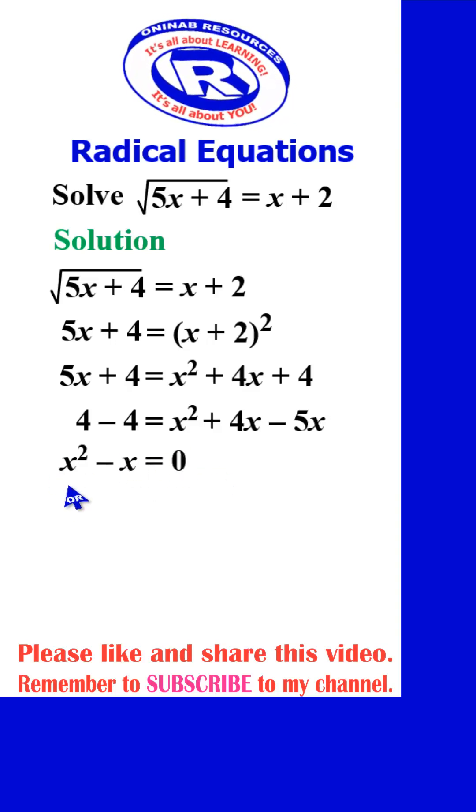Factorizing this, we have x into x minus 1 is equal to 0. Either x is equal to 0 or x minus 1 is equal to 0. Finally, we have our x to be equal to 0 or x is equal to 1.